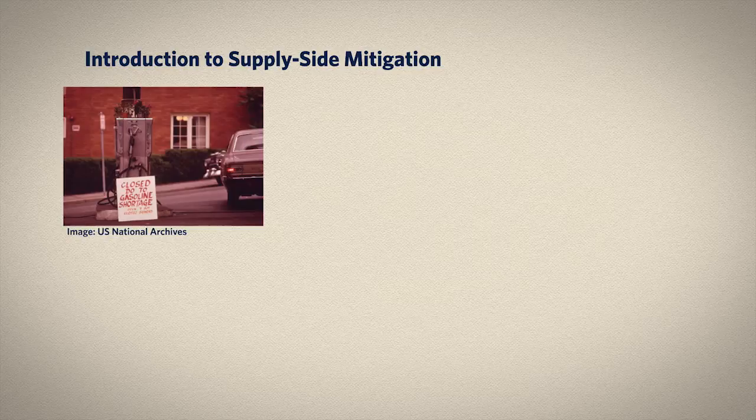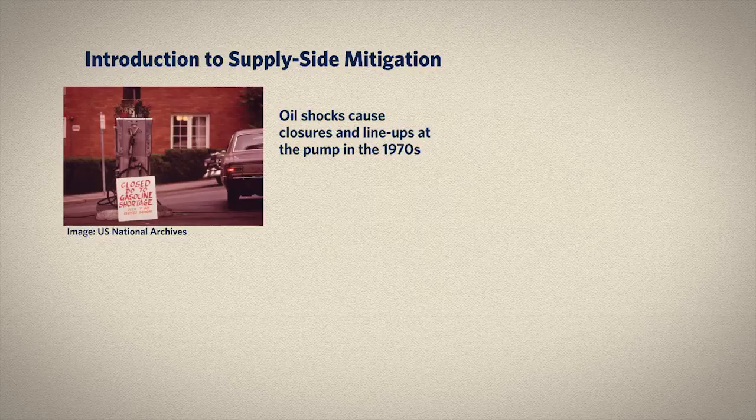Over the last three decades we've seen the far-reaching implications of a petroleum-based energy system. Major market disruptions in both 1973 and 1979 were triggered by geopolitical maneuverings on the part of the Organization of Arab Petroleum Exporting Countries, the United States, and others whose interests were deeply invested in maintaining a steady supply of oil from the Middle East.